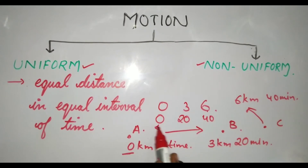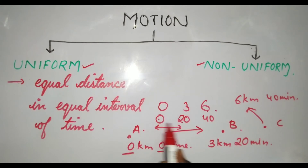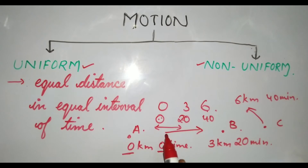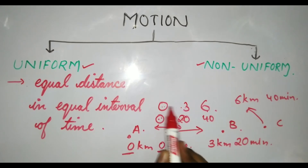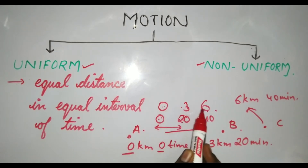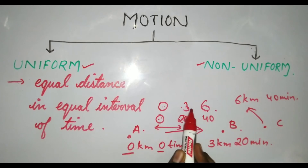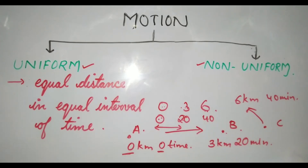The time is changing in equal intervals — from A to B is 20 minutes, and from B to C is again 20 minutes. The distance is also equal: from zero to three kilometers, and from three to six kilometers — three kilometers each. So equal distance is being covered in equal interval of time.